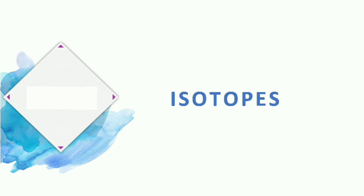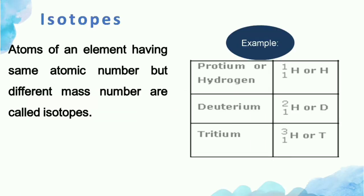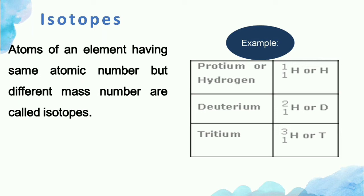Isotopes are defined as atoms of an element having the same atomic number but different mass numbers. For example, hydrogen has three isotopes: protium, deuterium, and tritium. Protium has mass number 1, deuterium (also known as heavy hydrogen) has mass number 2, and tritium has mass number 3. All three isotopes have the same atomic number, which is 1.